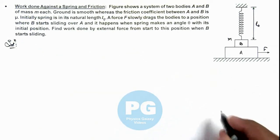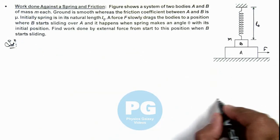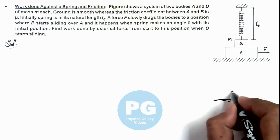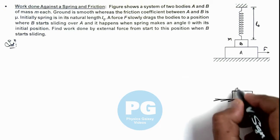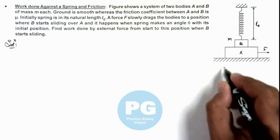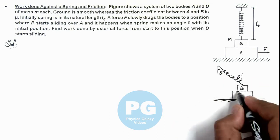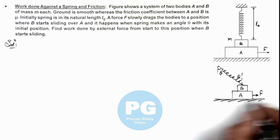Here we can draw the situation when B starts sliding over A. If this is the position where B starts sliding, and spring is in this state where it is making an angle θ with the vertical.